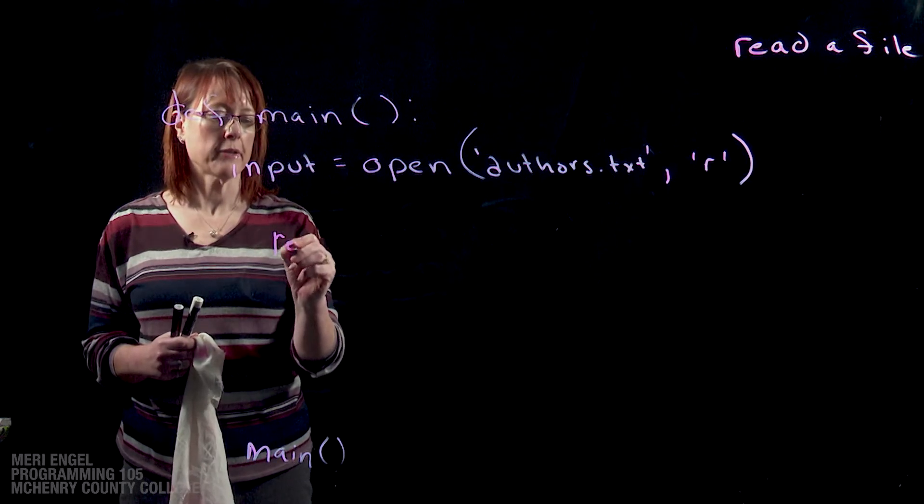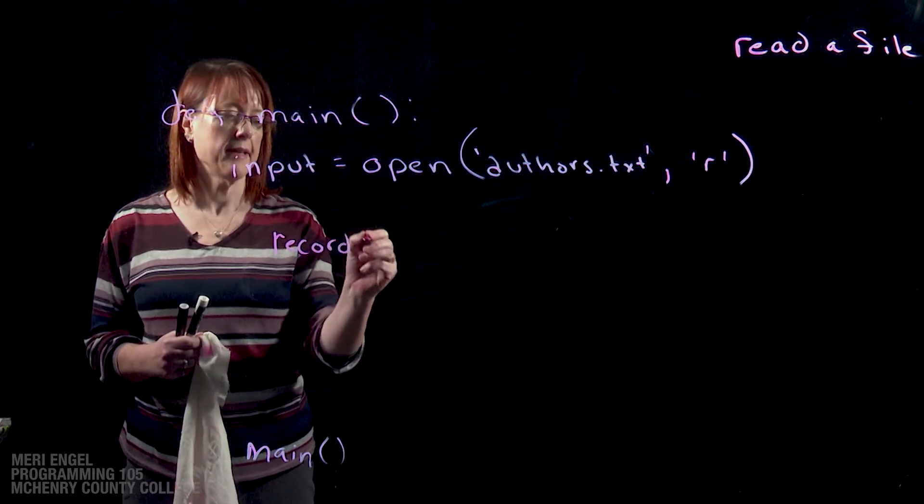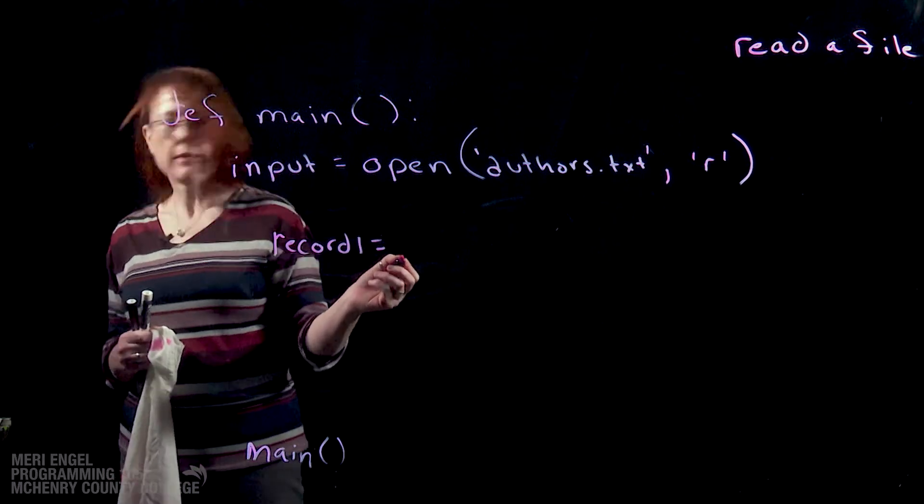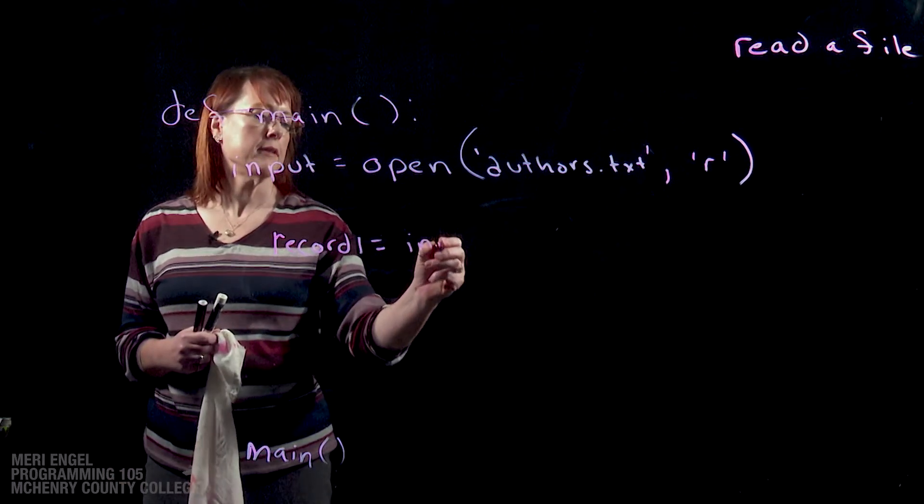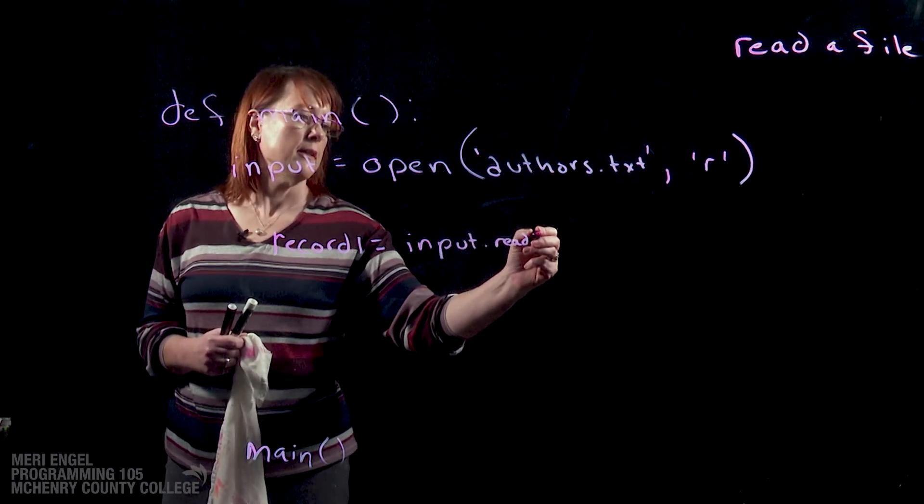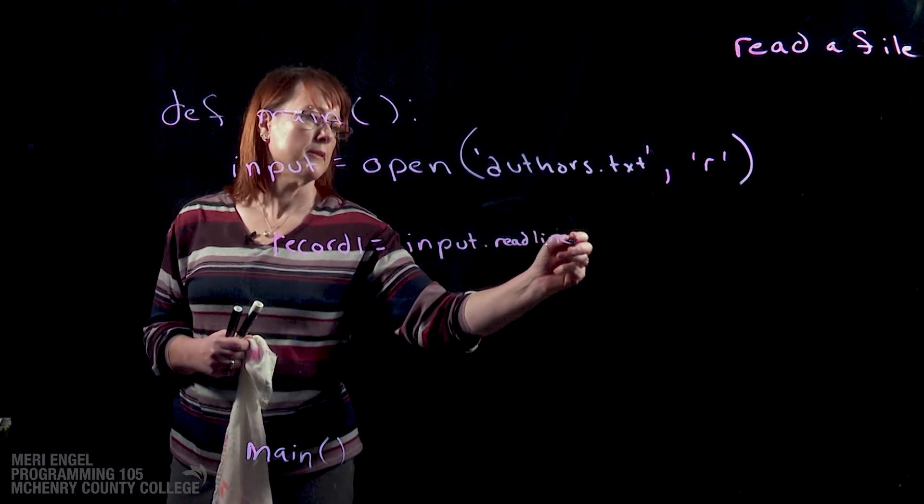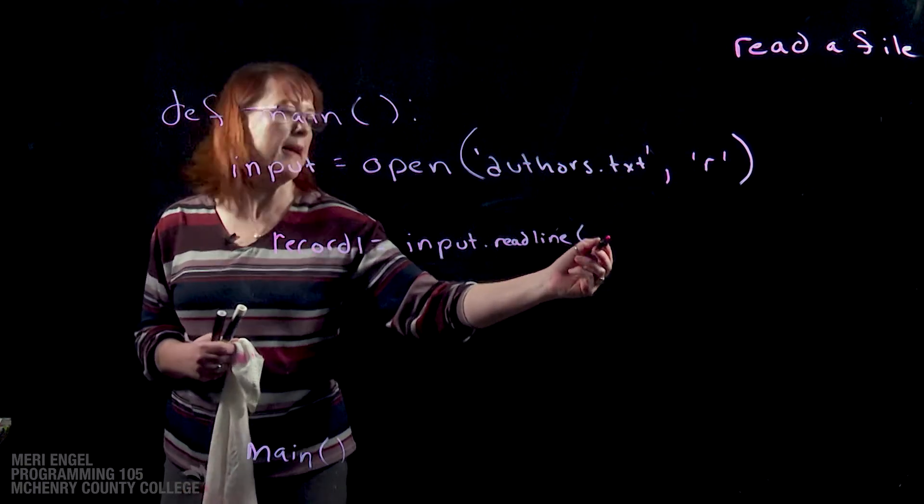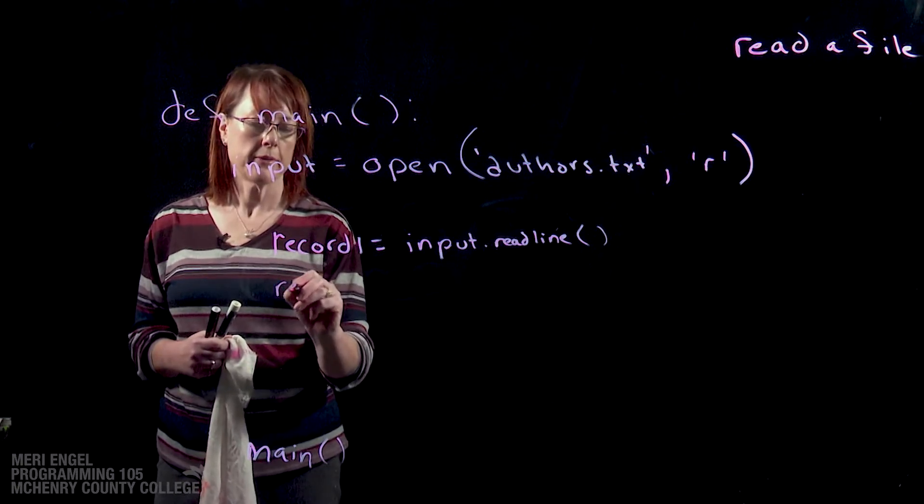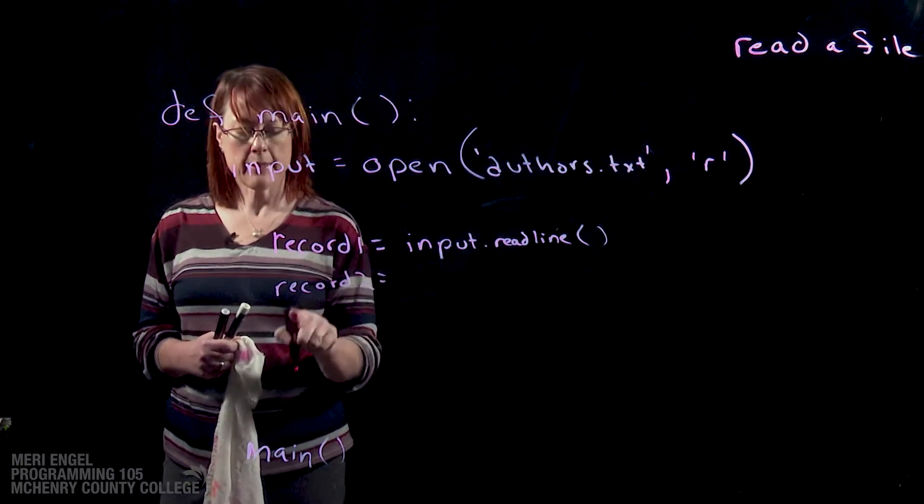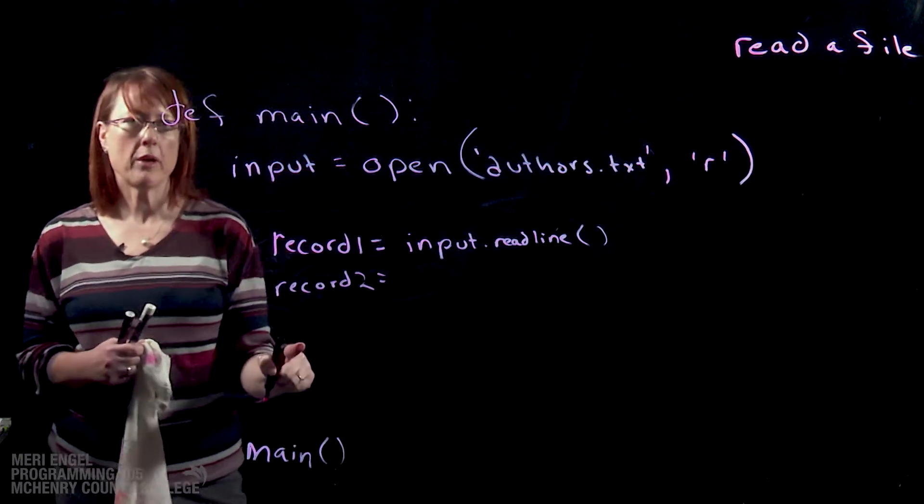And I'm going to call that a record because it's sort of acting as a database. And so we would do input.readline. We don't need to pass anything to that. And so we could do record2 equals input.readline, and we could keep doing that as many times as we want.